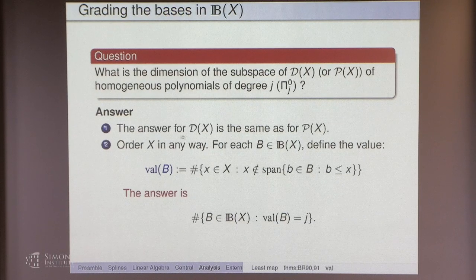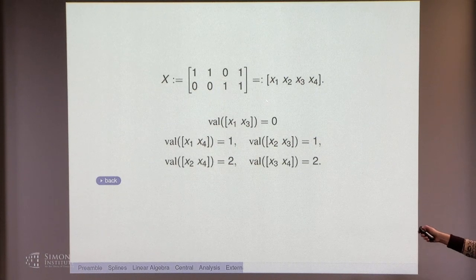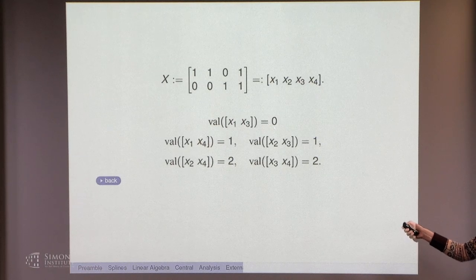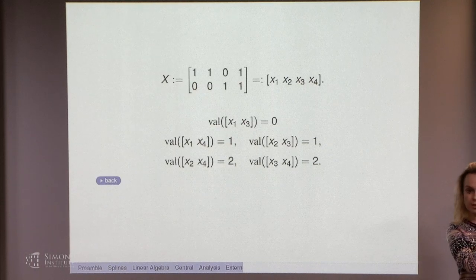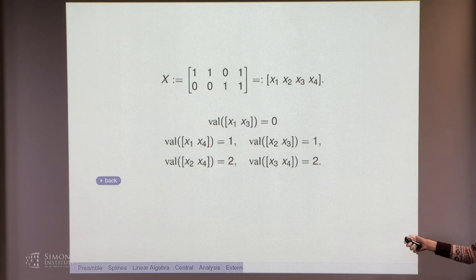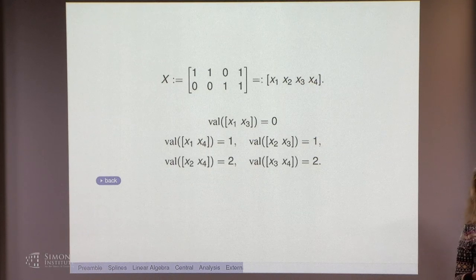The answer to your question — what is the homogeneous dimension in degree j — is given by the value of this valuation function: however many bases give you value j is the answer to your homogeneous dimension question. To give you an example from our baby little matrix: at the constant level you only have dimension one. At degree one you have full saturation — both linear terms. In degree two you start losing saturation, and you will see two values equal to two. The dimensions are one, two, two — so you see this whole grading: zero occurring once, one occurring twice, and two occurring two times.